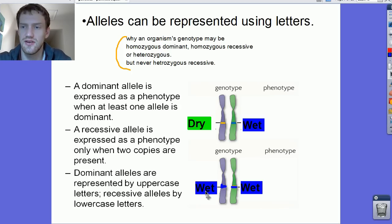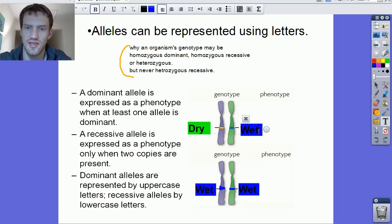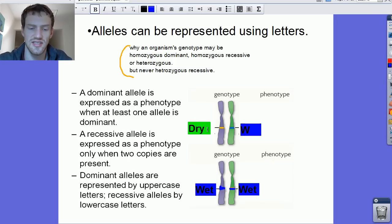Dominant alleles are always going to be represented by uppercase letters, and recessive alleles by lowercase letters. In this example, I'm going to change up my thing. I'm going to type in capital W for the dominant trait. And I'm actually going to switch this out and write in lowercase w. So big W for the dominant trait and a lowercase w for the recessive trait, which is going to be dry earwax.